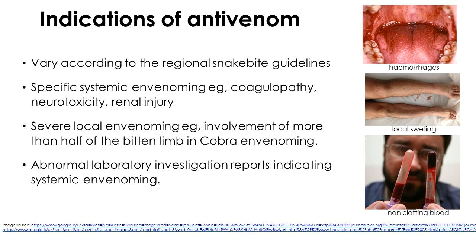Indications for administration of antivenom vary from region to region. In Sri Lankan guidelines, clinical features due to envenoming play a major role. These can be divided into three main parts: local effects of envenoming, non-specific systemic effects, and most importantly, organ-specific effects of envenoming. For example, activation of the coagulation cascade by toxins in snake venom leads to coagulopathy. Similarly, envenoming can cause neurotoxicity and nephrotoxicity.